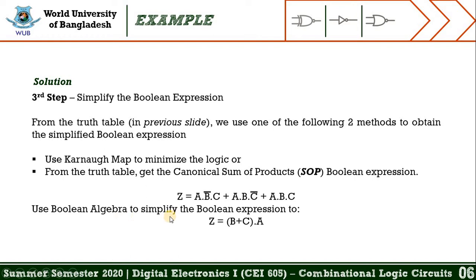If we simplify using Boolean algebra, we can get the simplified version: Z equals A·(B + C). How this simplification occurs is left as a homework task — you can try it and let me know.